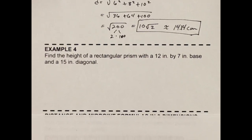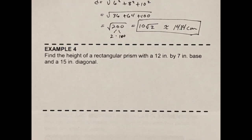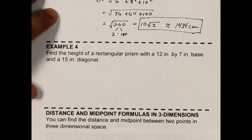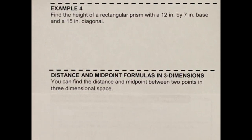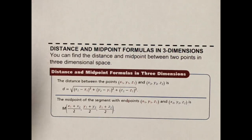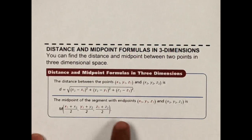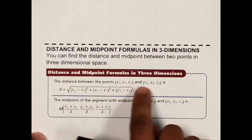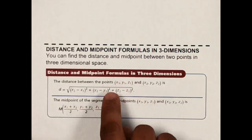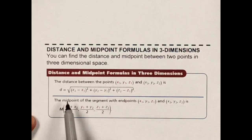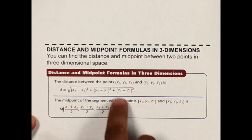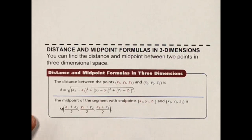So moving on to number 4, I'm going to actually leave that one up to you so you can check with me and make sure you got that one right. All right, now we need to talk about distance and midpoint formulas in three dimensions. They look awfully similar to what we did with two dimensions for midpoint and distance, except there's this z term. Since it's three dimensions, I have three axes: an x term, a y term, and a z term.